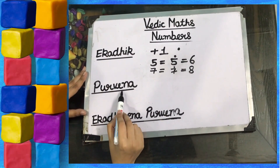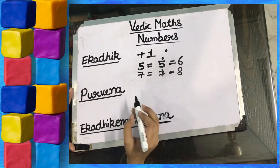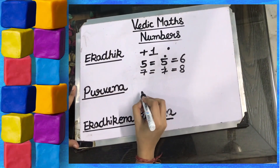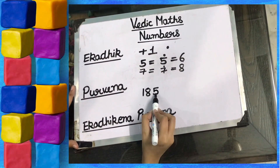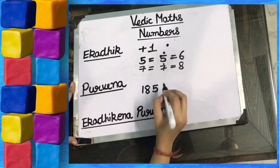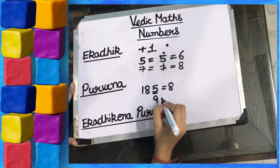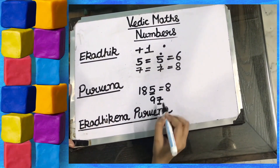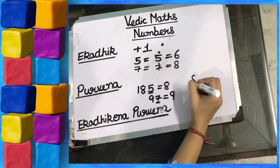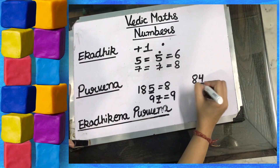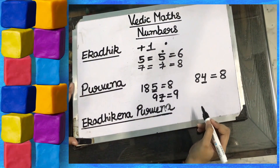The next term is Purven. Purven means previous digit. Write the previous digit of 5 in 185 — the previous digit of 5 in 185 is 8. Write the previous digit of 7 in 97 — it will be 9. Write the previous digit of 4 in 84 — the previous digit is 8.